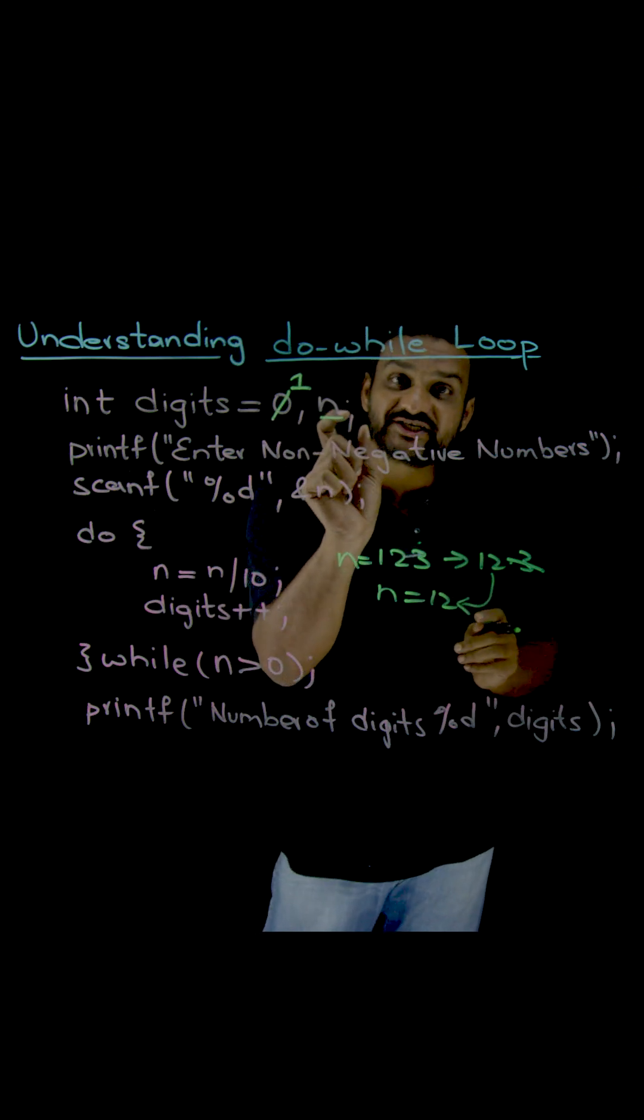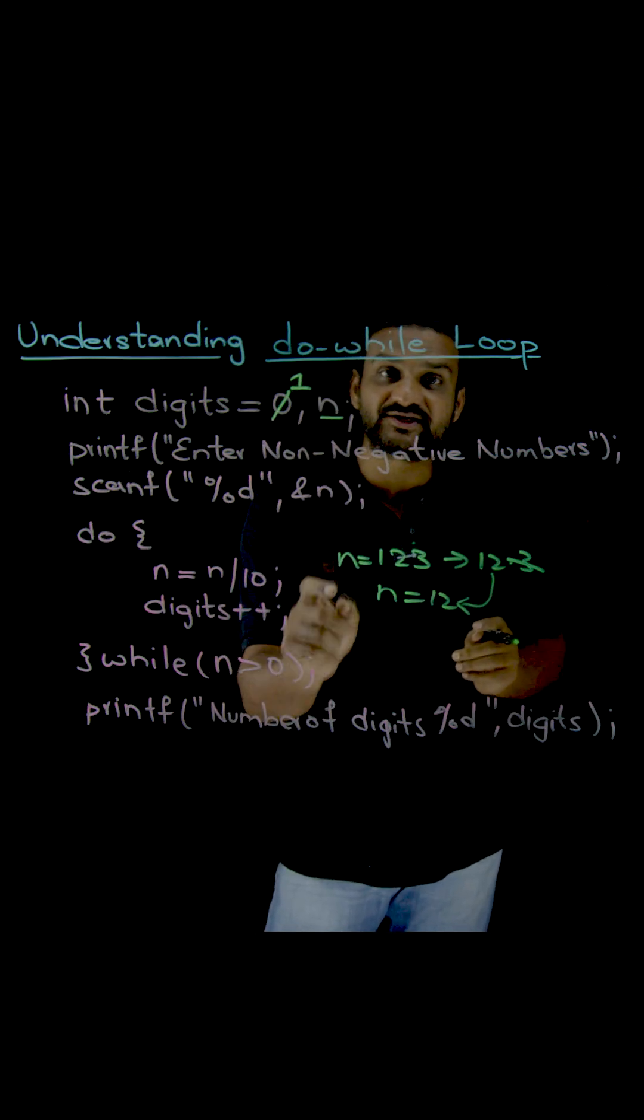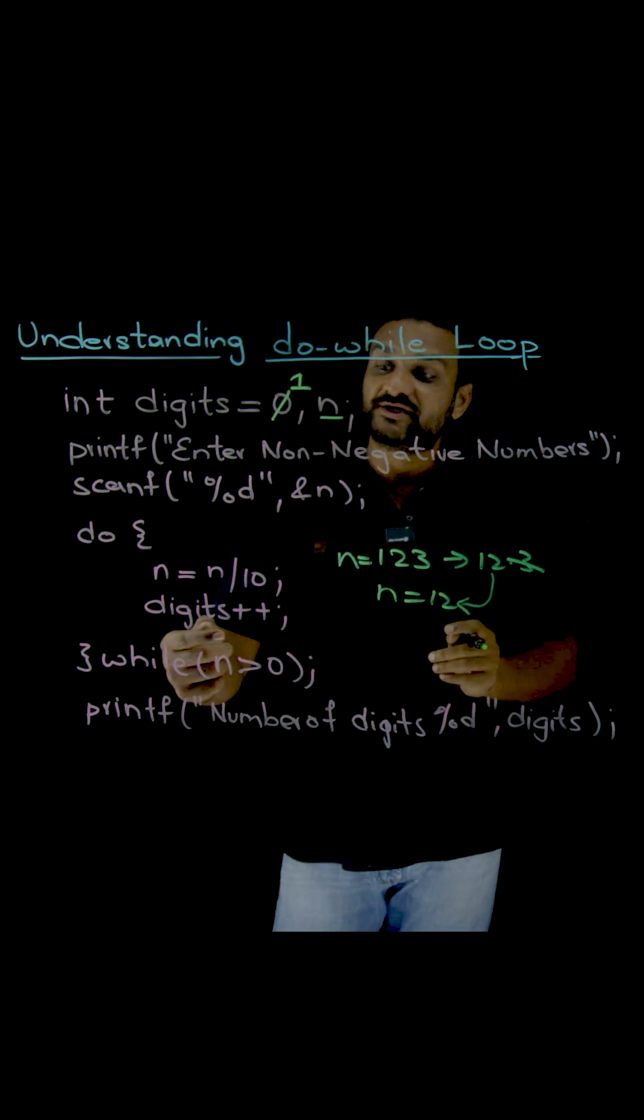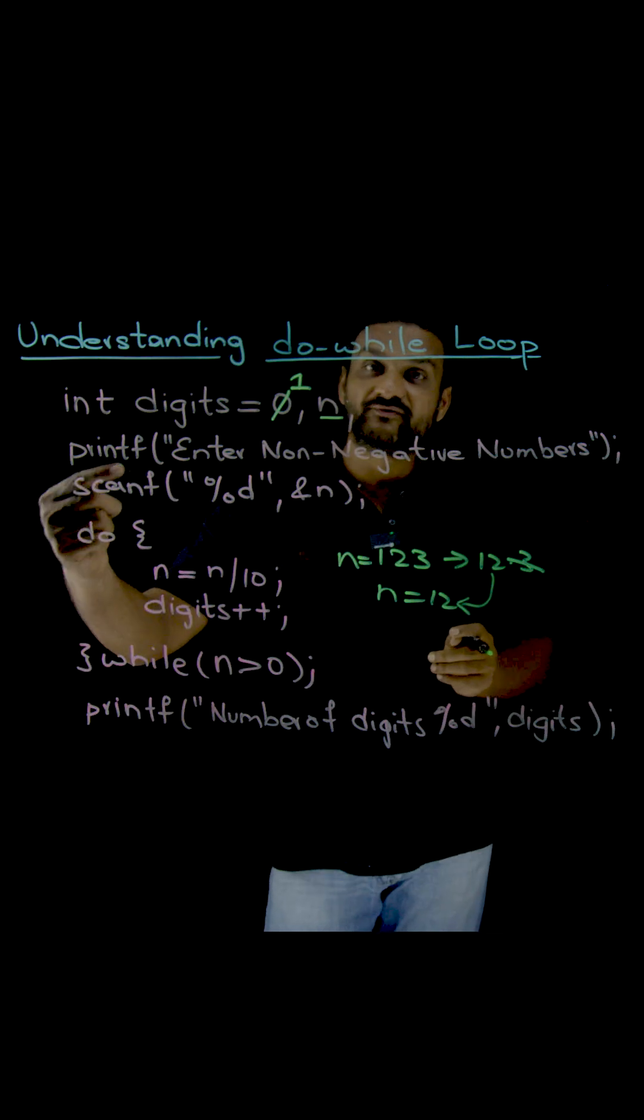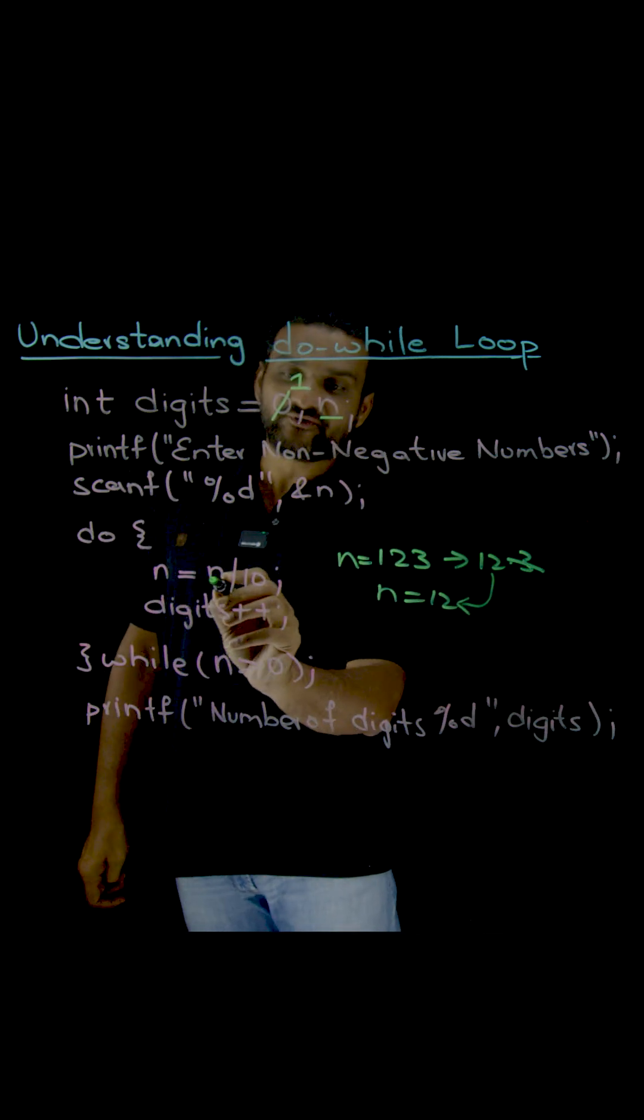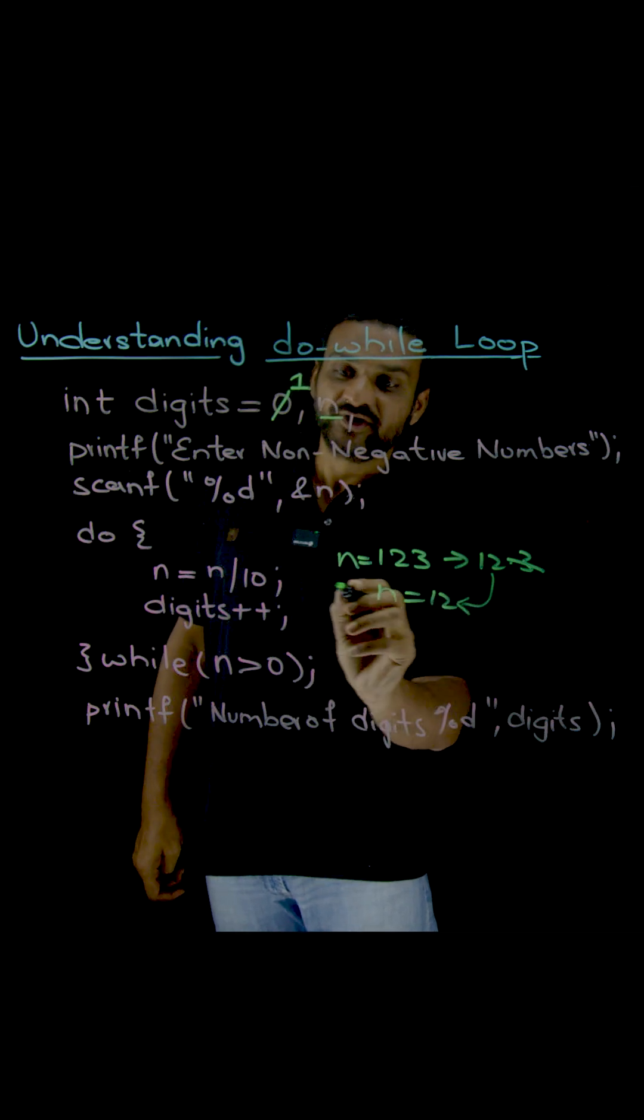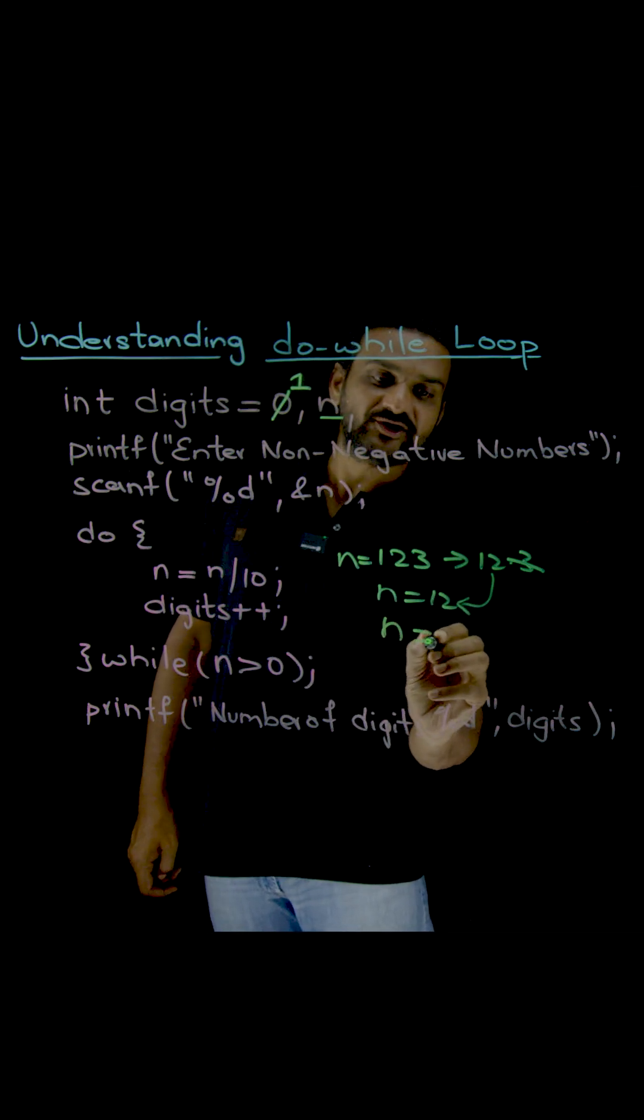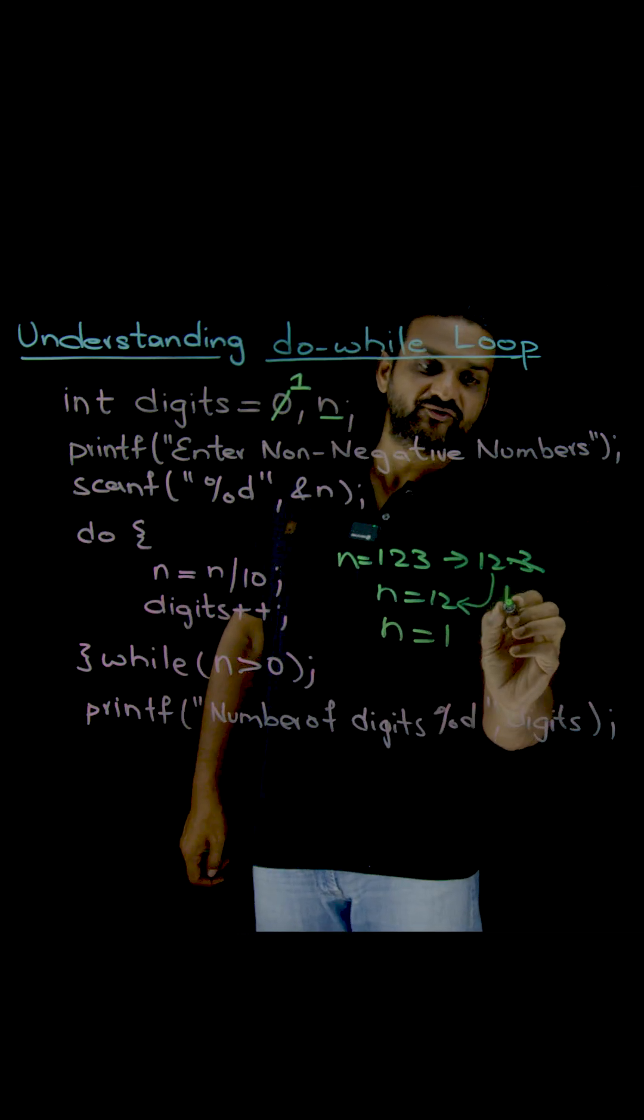Now what is the new value of n, which is 12. Is the value of 12 greater than 0? Yes, it is greater than 0. Now the body of the loop will get executed again. Now with the new value of n which is 12, 12 by 10, the new value is going to be 1. So 12 by 10